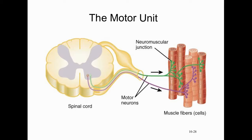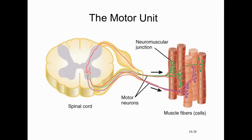Here's a typical motor unit diagram. This is the dorsal root where sensory information comes in through the posterior side of the spinal cord. Two motor neurons lead through the ventral root. The green motor neuron branches off at its axon terminals to form one motor unit, and the purple one innervates its own different muscle fibers. Each muscle cell is innervated by only a single motor neuron.